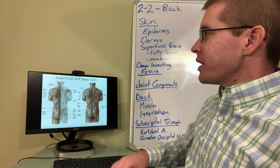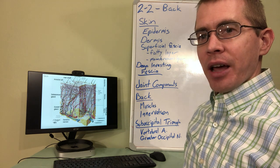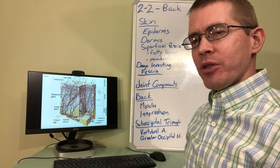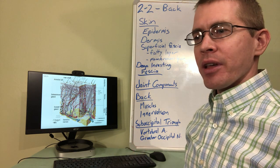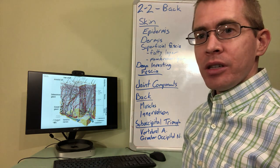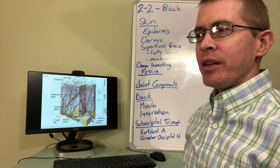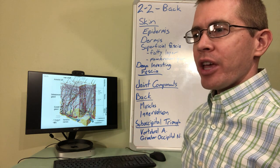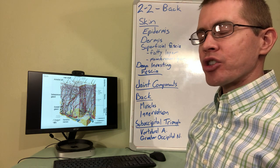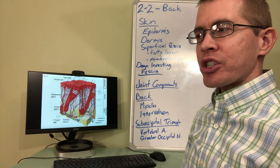As we start our dissection, we'll first have to remove the skin. As we cut through the skin, there are multiple layers you'll want to be aware of. Knowledge of these layers will help your dissection process — they'll allow you to know if you've cut deep enough, not deep enough, or too deep, and help you find the structures that are important in dissection. The skin is composed of an epidermis, dermis, and superficial fascia.